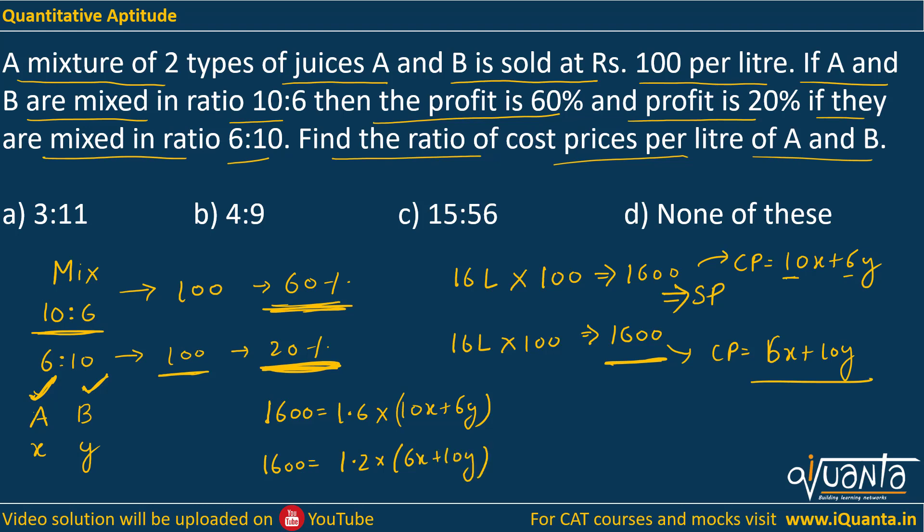Now since the LHS is same, we can equate these two. We can write 1.6 times (10x plus 6y) equals to 1.2 times (6x plus 10y). Since we have to find out the ratio of cost price per litre of A and B, it will be x upon y. In the LHS we have 1.6 into 10x which is 16x, minus 7.2x which gives me 8.8x. This will be equal to 1.2 into 10 which is 12y, minus 1.6 into 6 which is 9.6y, so we will get 2.4y.